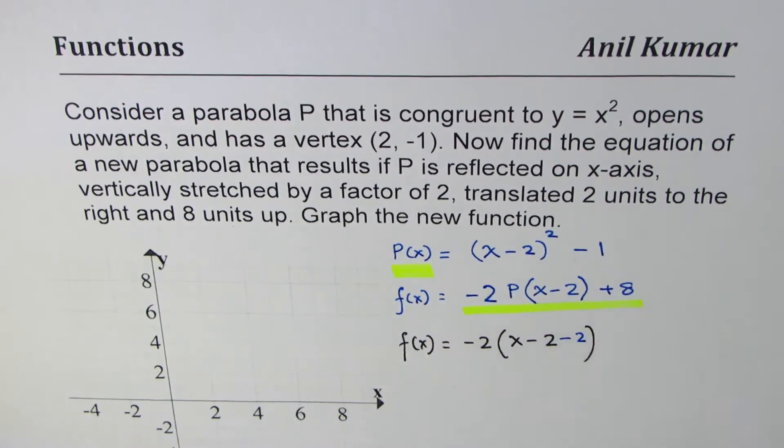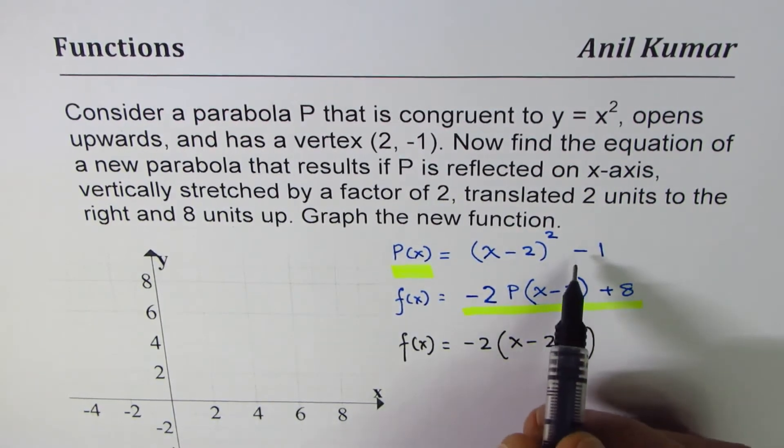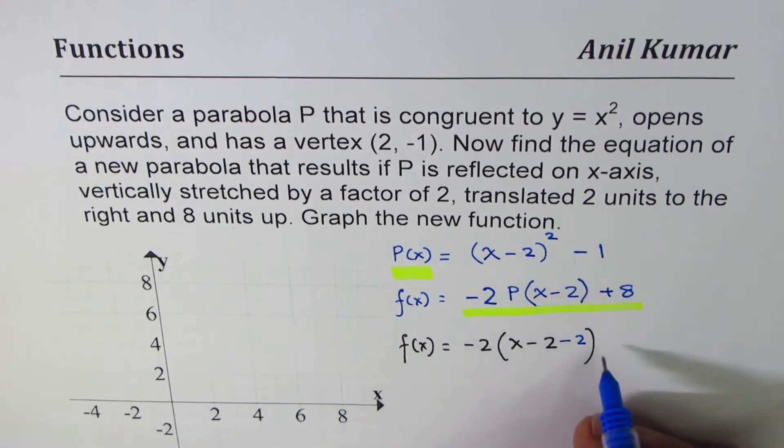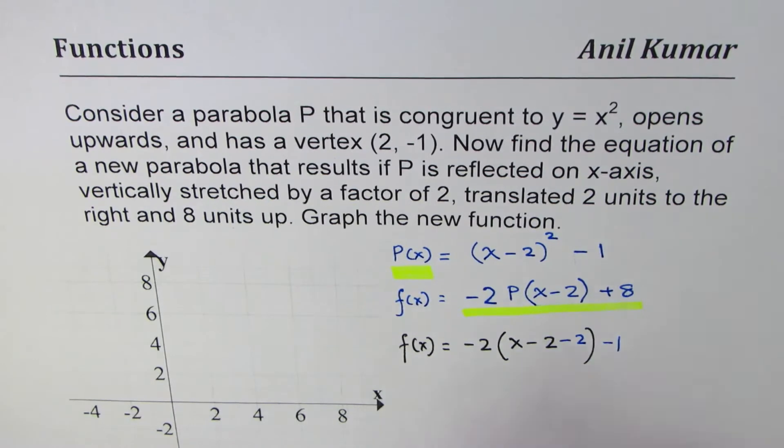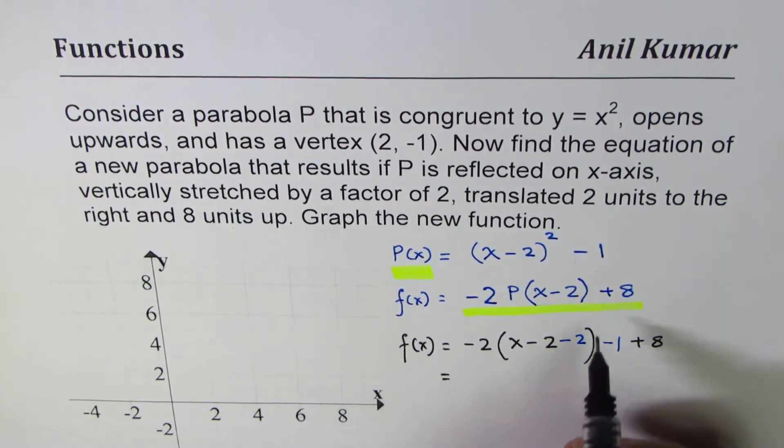We will introduce this -2 here. Because this function has been stretched, reflected and now translated 2 units to the right. So -2, does it make sense to you? Similarly, to the value which was plus 8, I mean value which was -1, we will add plus 8 to that.